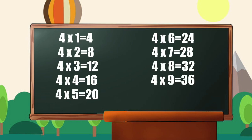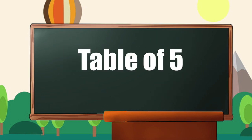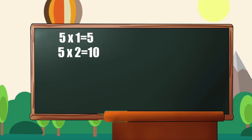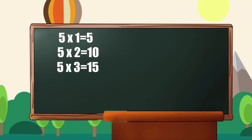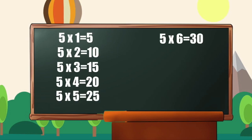4 9s are 36, 4 10s are 40. Table of 5: 5 1s are 5, 5 2s are 10, 5 3s are 15, 5 4s are 20, 5 5s are 25, 5 6s are 30, 5 7s are 35.